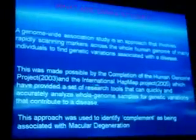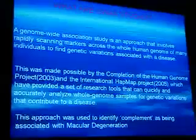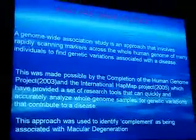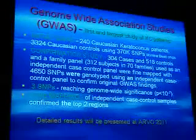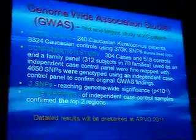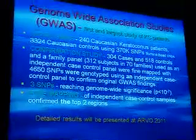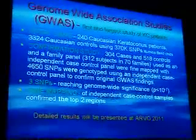Genome-wide association studies will find loci and identify genes with genetic variants predisposing to keratoconus. A GWAS is an approach involving rapidly scanning markers across the whole human genome of many individuals to find genetic variants associated with a disease. This was made possible by the Human Genome Project and the International HapMap Project. We just completed the largest GWAS study ever on keratoconus — 244 cases with 3,324 normal controls, a confirmation study with 518 controls, and a family panel of 312 subjects in 70 families. We identified three SNPs which reached genome-wide significance.